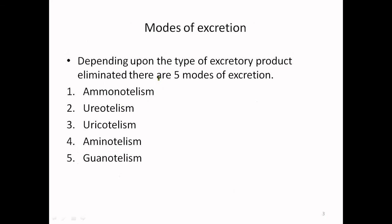The core intention of this video lecture is to make you understand how animals are classified into different groups. There are mainly three important groups: ammonotelism, ureotelism, and uricotelism. There are also a few animals which show aminotelism and guanotelism — in aminotelism the amine group as such is excreted out, and in guanotelism the excretory product formed is guanine. Very few animals show such excretion, but majorly these three categories we shall discuss.